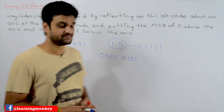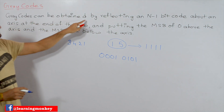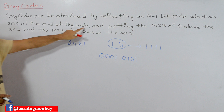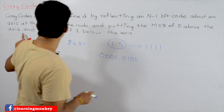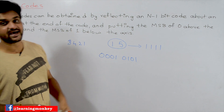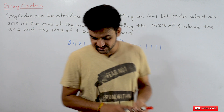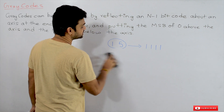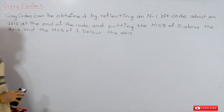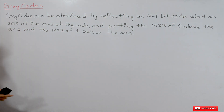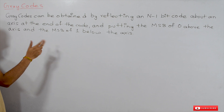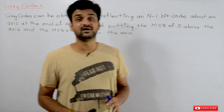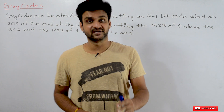How can the gray codes be obtained? Gray codes can be obtained by reflecting an n-minus-one bit code about an axis at the end of the code, putting the MSB of 0 above the axis and the MSB of 1 below the axis. We will try to understand this definition using an example to extract the gray code representation of decimal numbers.